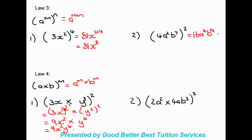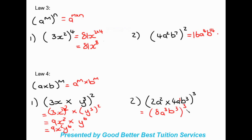The second method is to multiply what's inside the brackets first, then apply the outer power. For the next example: two a squared times four a b to the power of three, all to the power of three. Working inside the brackets: two times four gives eight, a to the power of two plus one gives a cubed, then b to the power of three — all to the power of three.